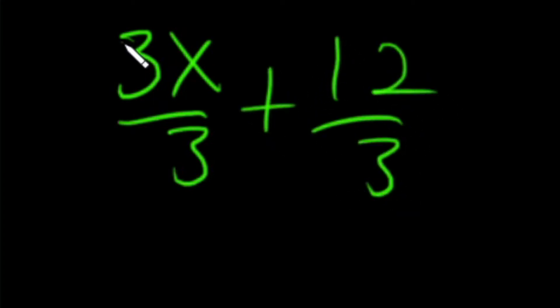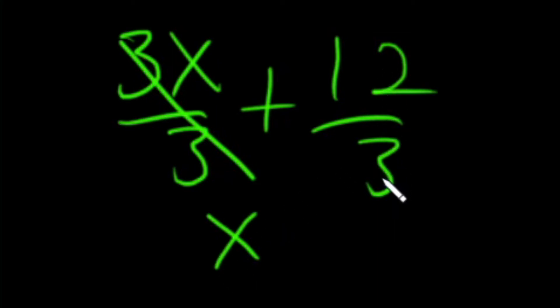Now the threes here will cancel. We get x. 12 divided by 3 is 4, so the answer is x plus 4.